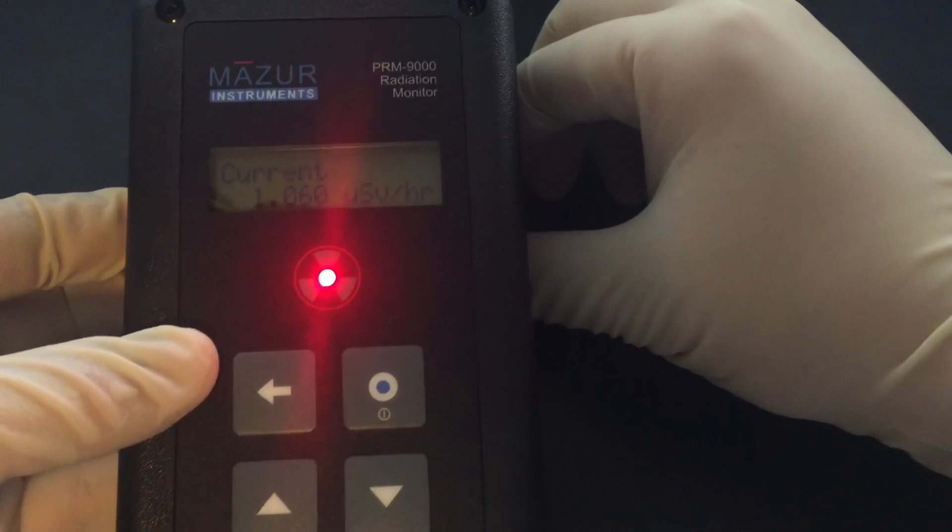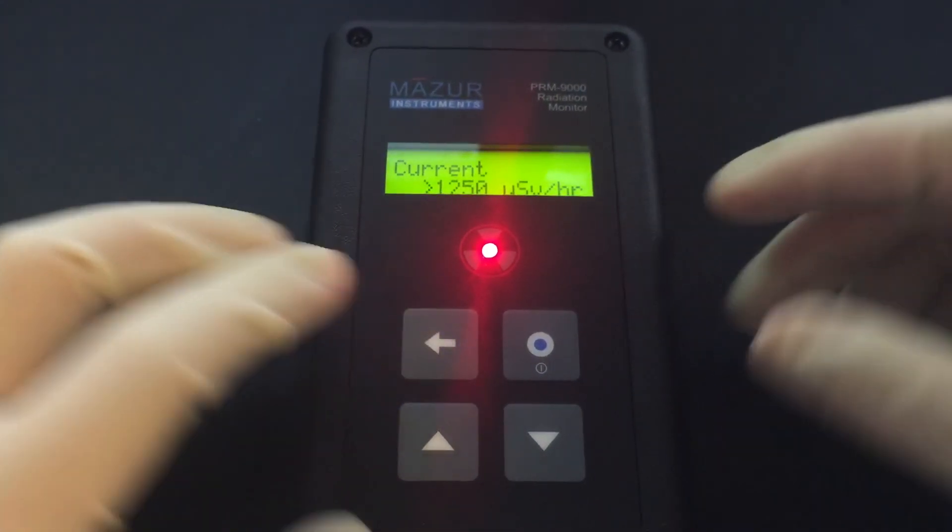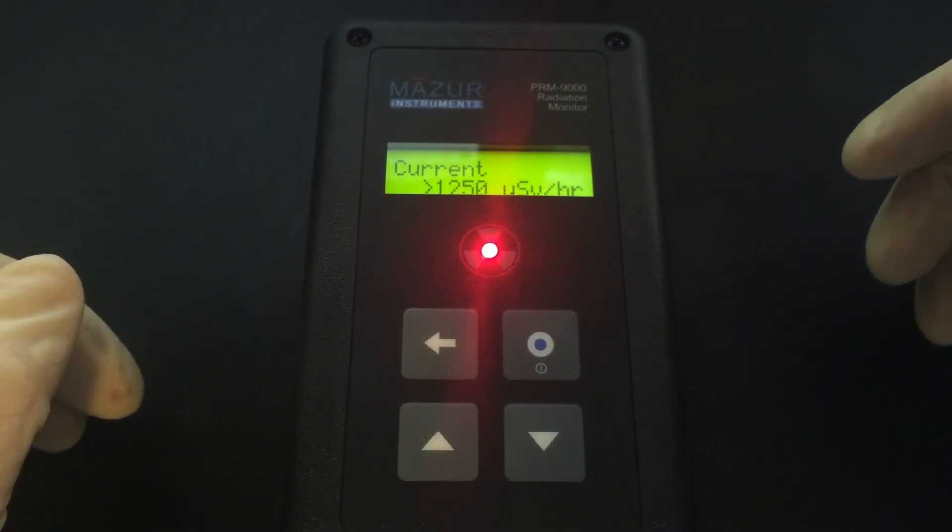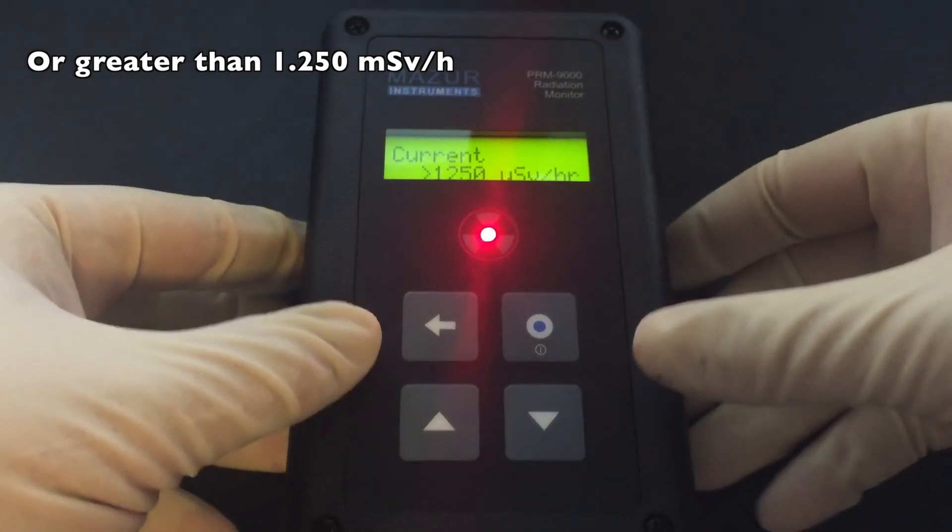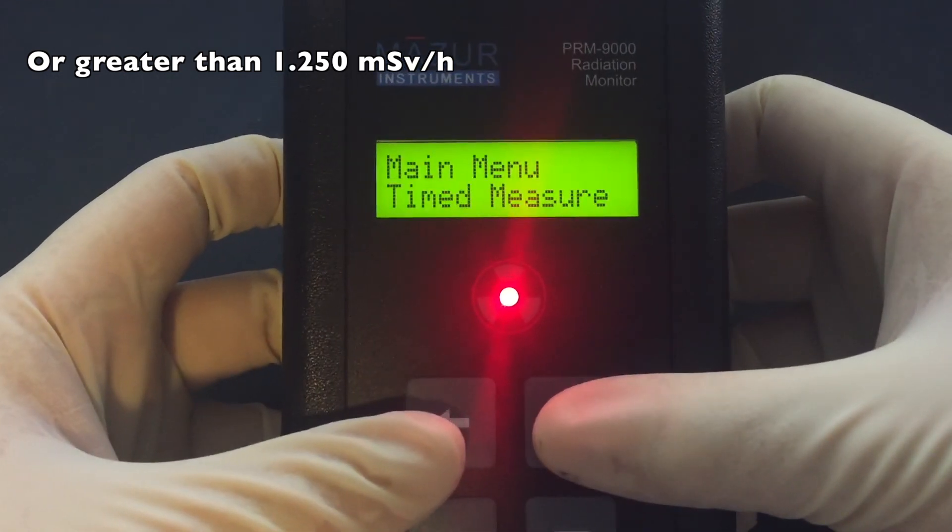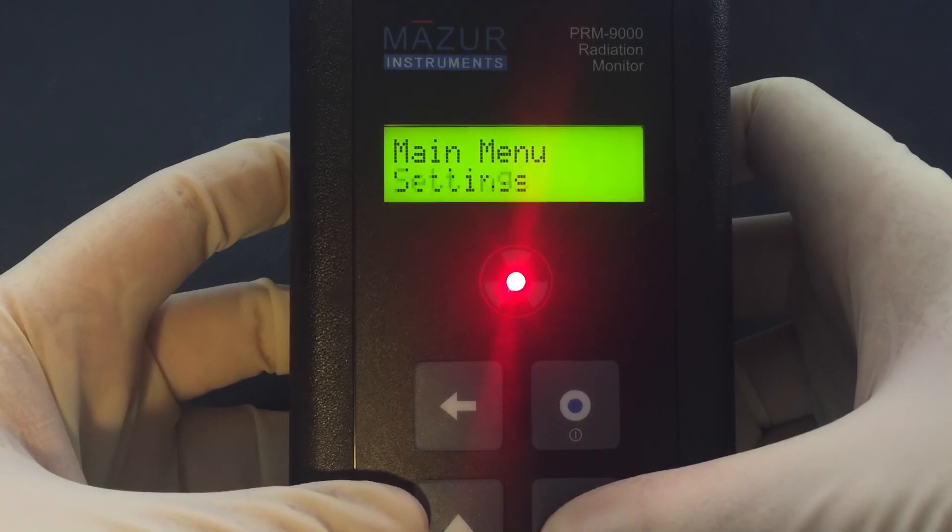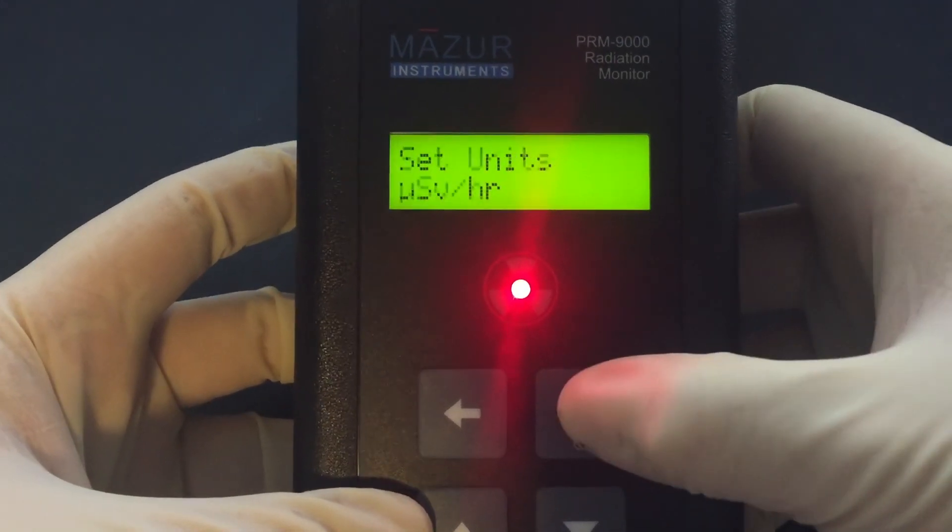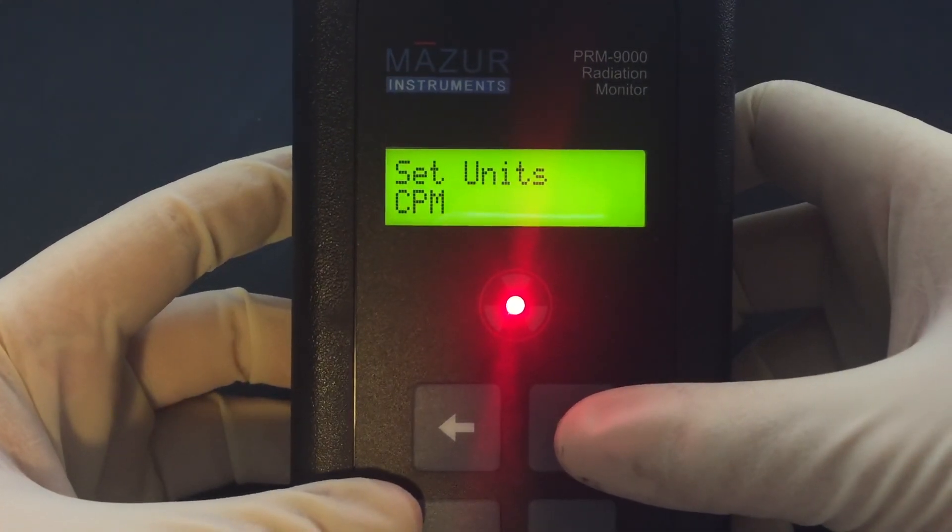go crazy. Now we flip it over, put it on top, and we have greater than 1250 microsieverts an hour and a really annoying beep. So let's see what it says in counts per minute.